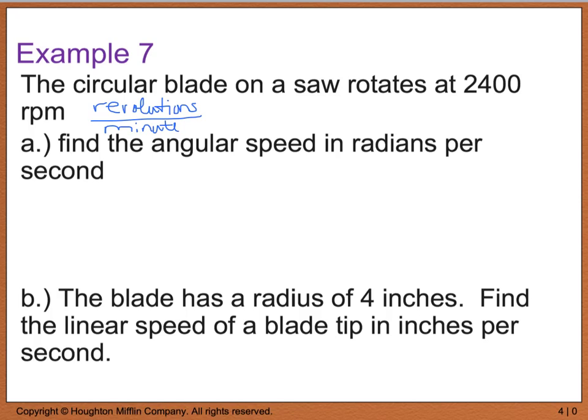So, we want to find the angular speed and radians per second. And then, once we've found that, we want to find when the blade has a radius of 4 inches, we want to know what is the linear speed of a blade tip in inches per second. So, for part A, I'm going to start out with what I know. I know that I'm given 2400 revolutions, and I'm going to write this as a fraction, per minute.